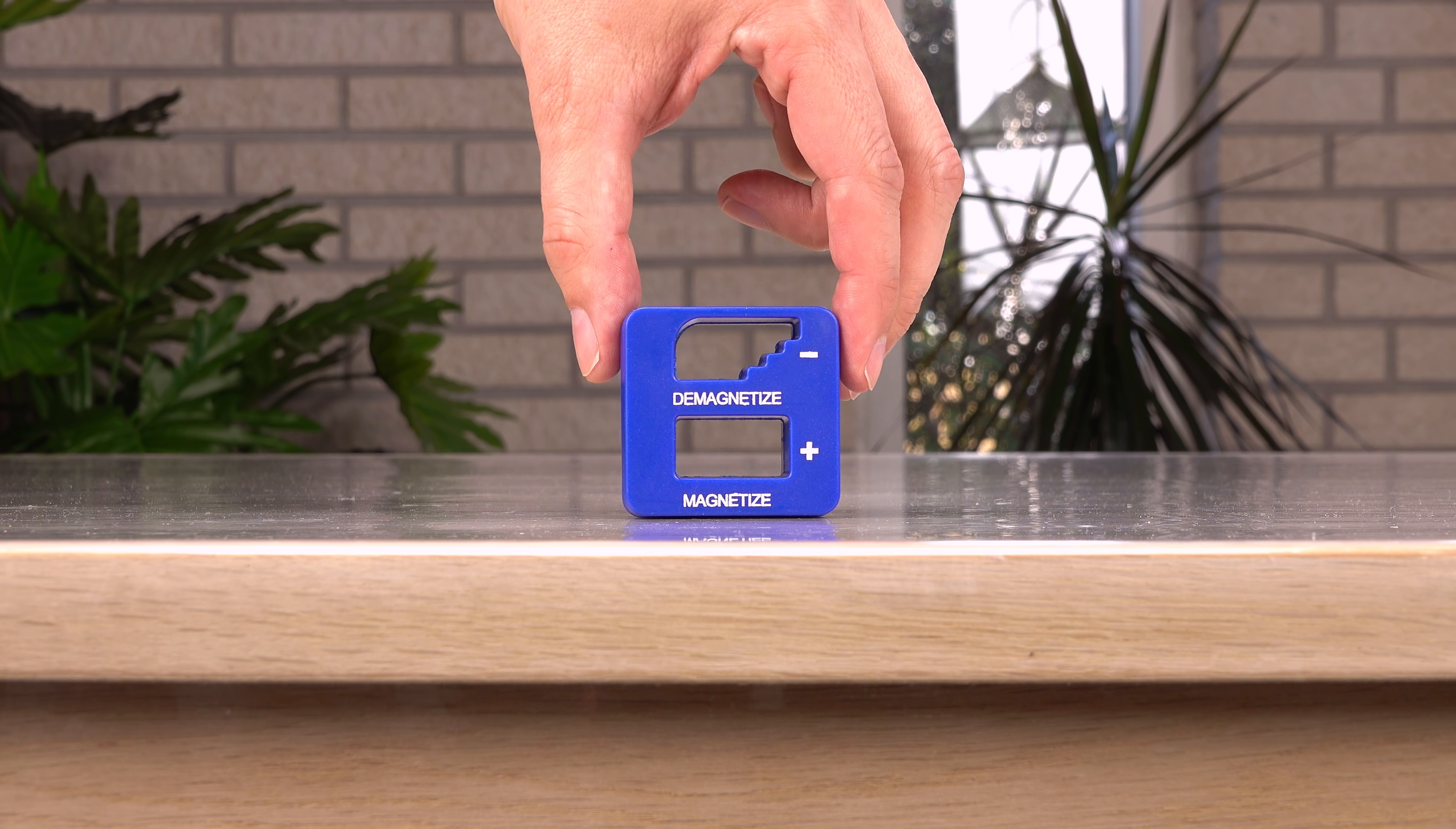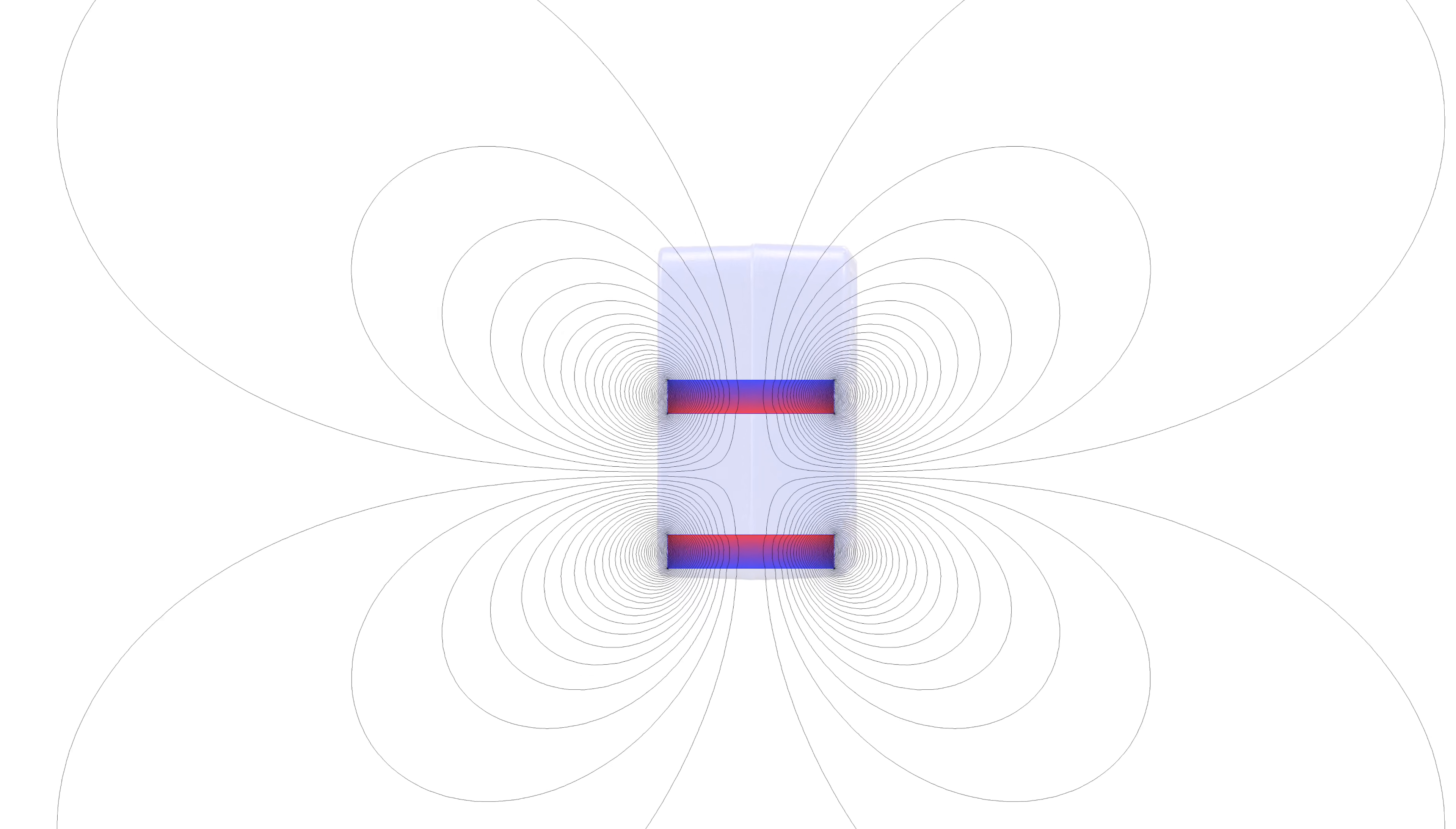Here's how I think it all works based on the evidence collected. In the magnetizer, the field is strong and parallel with the screwdriver's shaft, magnetizing the screwdriver with the pole at the tip.